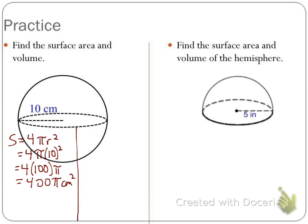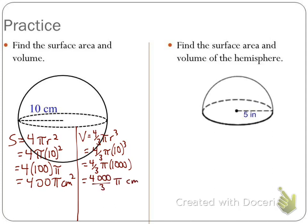Now for the volume with radius 10: the formula is 4/3 πr³, so 4/3 π times 10³. That becomes 4/3 π times 1,000. We can't divide 1,000 by 3 evenly, so we write 4,000/3 π centimeters cubed. If we want to approximate, that comes out to about 1,333.3π centimeters cubed.